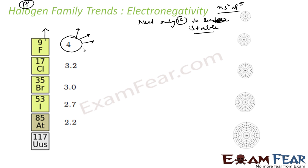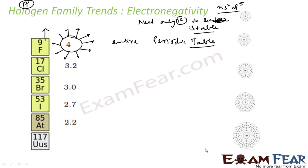Please note: fluorine has the highest value of electronegativity in the entire periodic table. Fluorine is the most electronegative element found so far. The halogen family has high electronegativity because they need only one electron to be stable, giving them a strong tendency to attract one electron from nearby atoms. The electronegativity values decrease as we go down the group: 4, then 3.2, then 3, 2.7, and then 2.2.